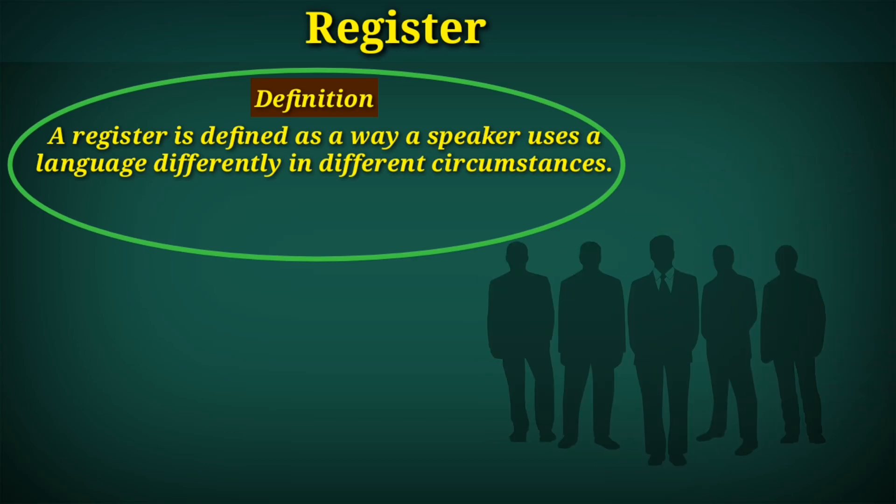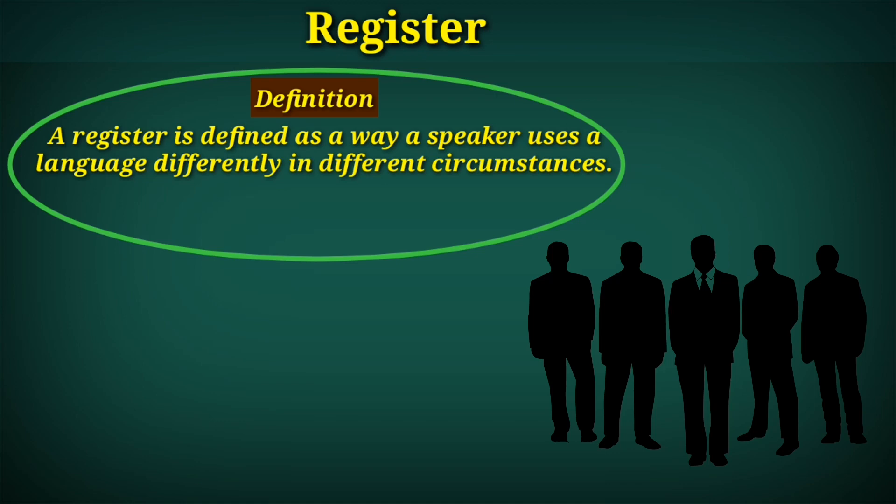For example, when we talk to our friends, we use different vocabulary and our manner of communication is also different. But when we communicate with our parents or teachers, we do not use the same vocabulary, terms, and sentences as we use with our friends. This is simply called register.